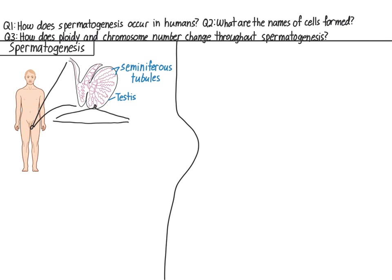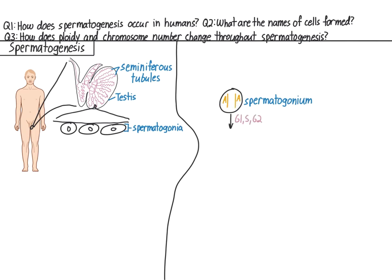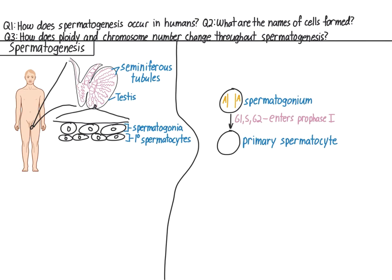If we zoom into one tubule, at the outermost part of the tubule, we find diploid cells called spermatogonia. One of these cells is a spermatogonium. This spermatogonium is the cell that will undergo meiosis and produce the sperm. Let's follow one chromosome type with the hypothetical A gene as it goes through meiosis. The spermatogonium goes through G1, S, and G2. Once it enters prophase I, it's now considered a primary spermatocyte. In the seminiferous tubules, the primary spermatocytes are found just inside the spermatogonia.